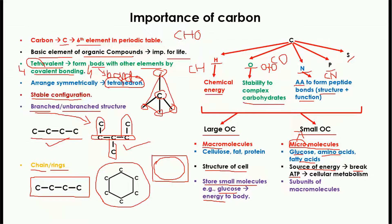Whenever energy is needed in the body, ATP breaks down to provide it, making it very important for cellular metabolism — that is, the chemical reactions taking place in a cell. These small organic molecules are also the subunits of macromolecules, meaning small organic compounds combine together to form macromolecules.